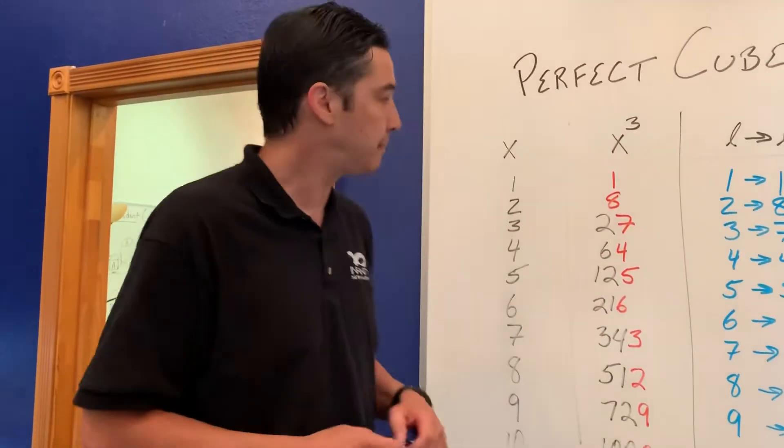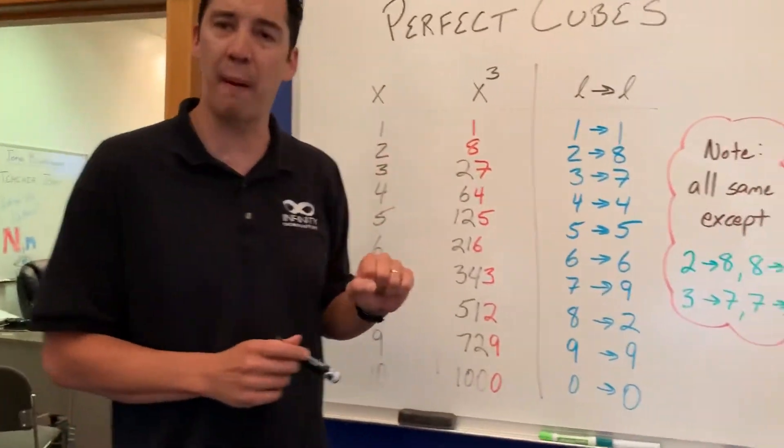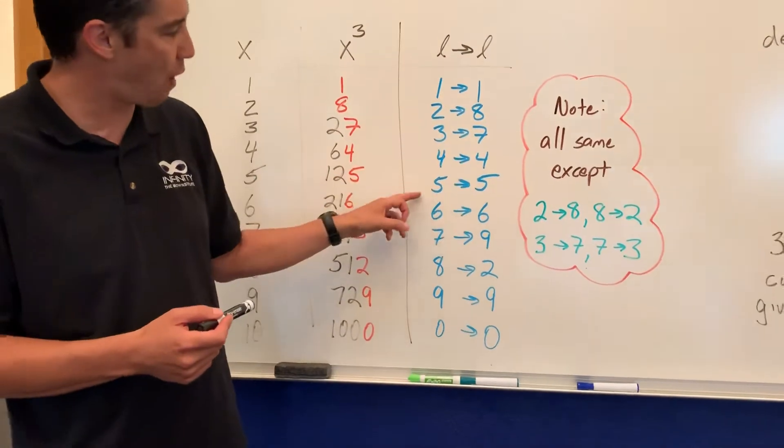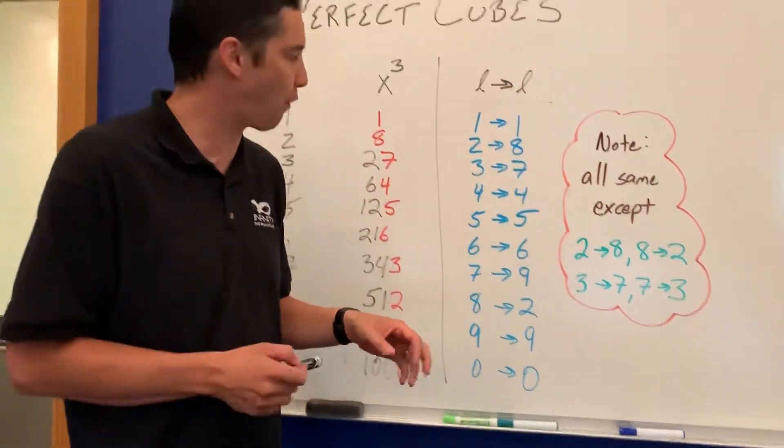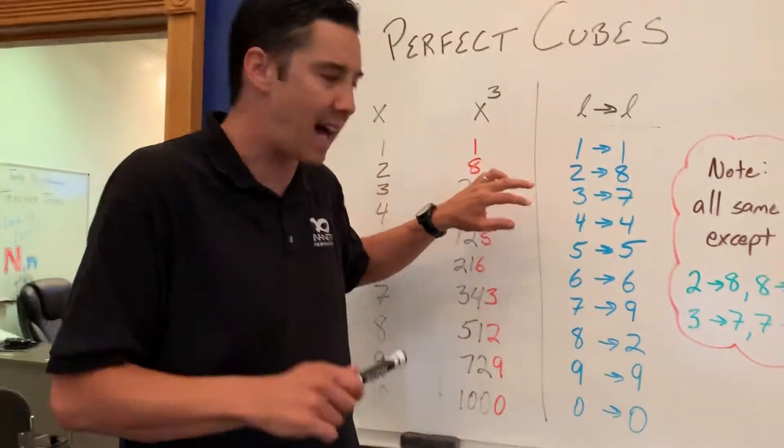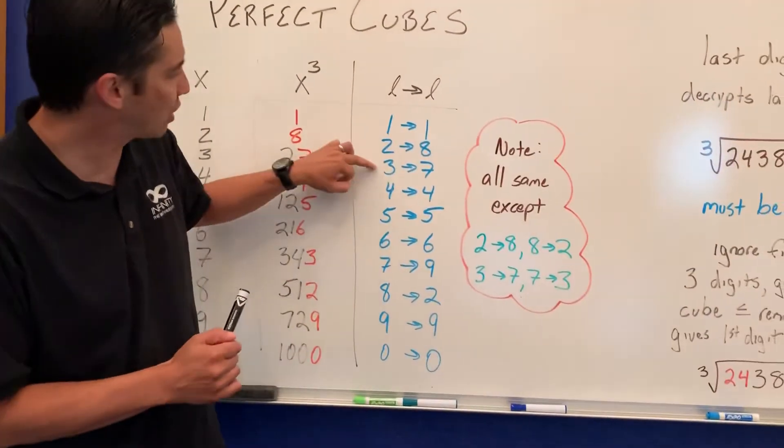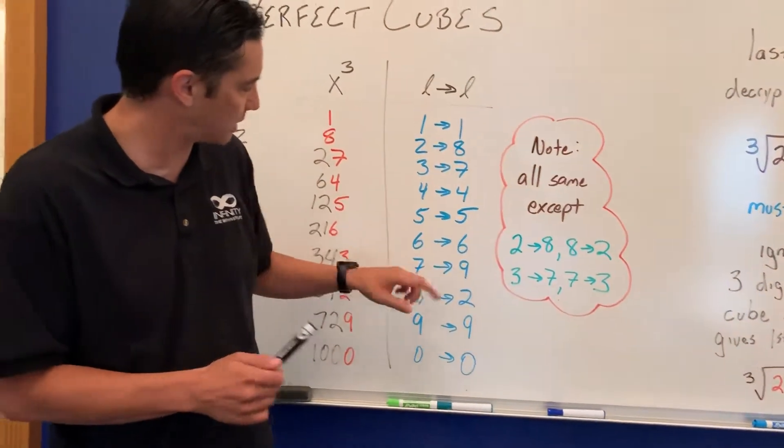One thing you'll notice is that each number corresponds to a different number. The 1 goes to 1, the 4 goes to 4, 5 goes to 5, so on and so forth. The only caveat is the 2 goes to the 8 and the 8 goes to the 2, and the 3 goes to the 7 as the 7 goes to the 3.